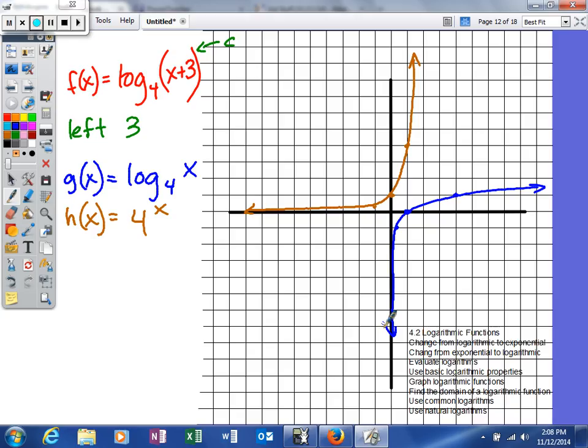Now, what we're going to do is we're going to now transform that. So log base 4 of x plus 3. Again, what we're going to do is we're going to move it left 3. So we're going to take this logarithm and move everything left 3. So 1, 2, 3. I'm going to go ahead and get rid of this brown function. So we're going to move it left 3. So what we'll do is we'll say 1, 2, 3, 1, 2, 3, and then 1, 2, 3. So my graph will look a little something like this.